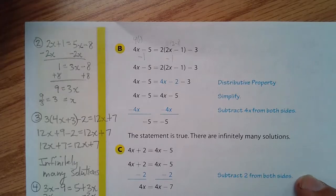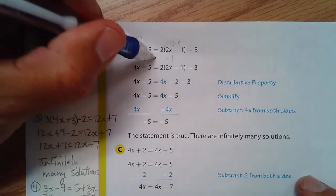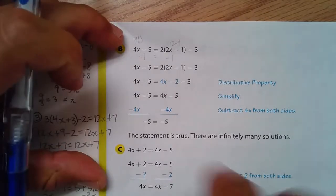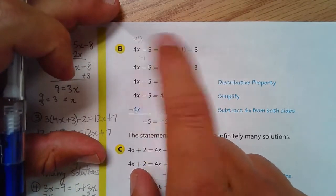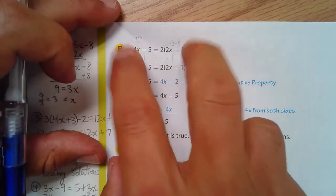See, I just picked 1. And I got a true statement there. So no matter what, you can pick negative 2,605 for x. If you plug it in both sides and you do the order of operations, you'll get the same number on both sides.